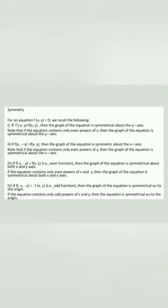Third case: if f(−x, −y) = f(x, y), these functions are called even functions, and the graph is symmetrical about both the x-axis and y-axis. If the equation contains only even powers of both x and y, then the graph is symmetrical about both axes.